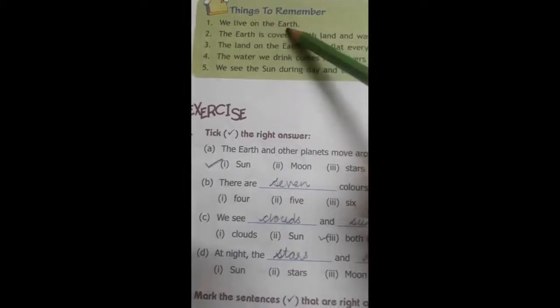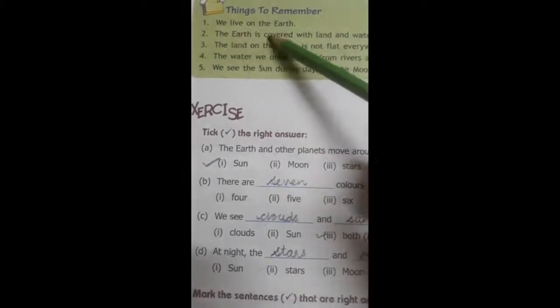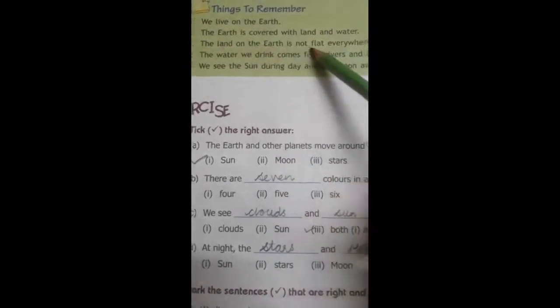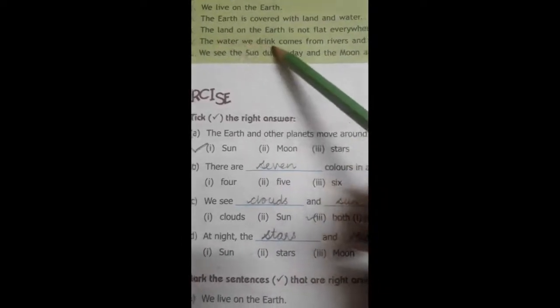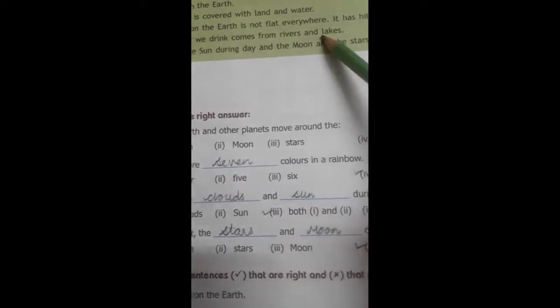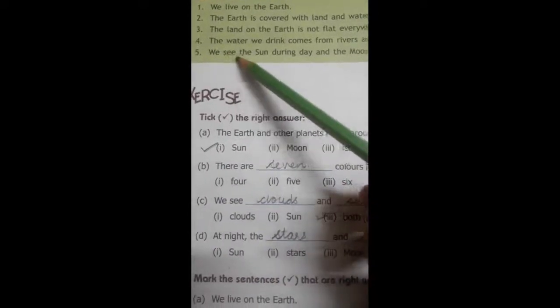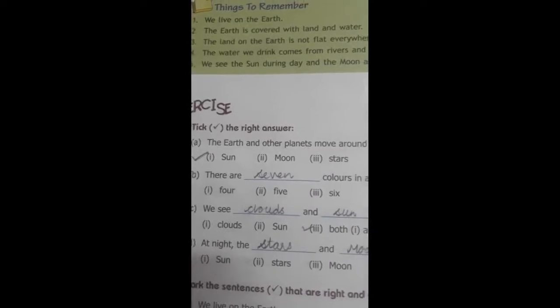Now next page, things to remember. Number 1, we live on the earth. Number 2, the earth is covered with land and water. Number 3, the land on the earth is not flat everywhere. It is hills and mountains. Number 4, the water we drink comes from rivers and lakes. Number 5, we see the sun during day and the moon and the stars at night. So children, these things we learn from this chapter. So I hope you enjoyed the chapter. You also read this chapter nicely.